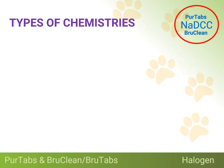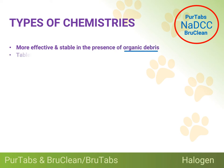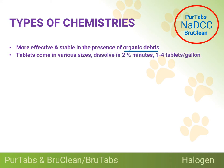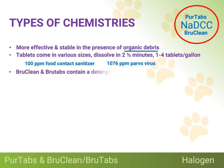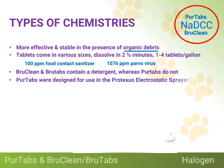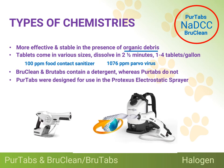The chemistry and mode of action of NADCC is significantly different than that of bleach, making for a halogen that is more effective and stable in the presence of organic debris. Tablets come in various sizes, dissolving in about two and a half minutes, requiring between one to four tablets per gallon of water — 100 parts per million as a 60-second food surface contact sanitizer, and 1,076 parts per million for parvovirus disinfectant efficacy. The difference between Pure Tabs and Brew Clean or Brew Tabs is that Brew Clean and Brew Tabs contain a detergent, whereas Pure Tabs do not.